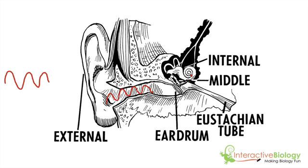We'll look at what's happening inside the cochlea in more detail in the next episode. But that vibration causes a signal in the auditory nerve, and that signal travels to the brain. There are receptors inside the cochlea that respond to the vibrating fluids, causing a receptor potential, which sends a signal to the brain. The brain then interprets that signal as sound — and that's how you hear whatever is the source of the sound.